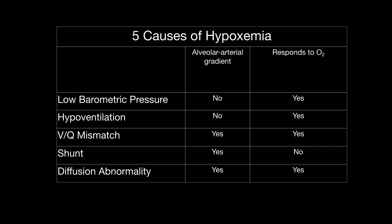So, the five causes of hypoxemia: low barometric pressure, hypoventilation, VQ mismatch, shunt, and diffusion abnormality. This is incredibly complex, but it's worthwhile knowing the five causes, knowing that VQ mismatch is the most common, and also that hypoventilation — as CO2 increases — can also cause hypoxemia.